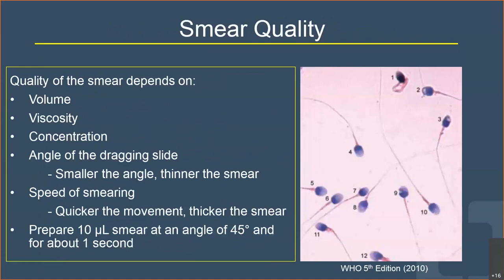Smear quality is examined by bright-field microscopy. Quality depends on several factors: volume, viscosity, concentration, angle of the dragging slide — a smaller angle gives a thinner smear — and speed of smearing; quicker movement gives a good feather smear. Start with a 10-microliter droplet at 45 degrees for one second. A good stained smear shows the acrosomal area in dark lavender, midpiece stained pink, and tails stained well. Ideal density is 8 to 10 sperm per high-power field, as per WHO 5th edition.